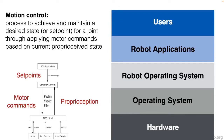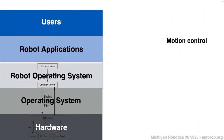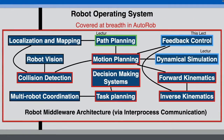To summarize motion control: it's the process by which a robot can achieve and maintain some desired state for some of its joints by applying motor forces based on the current perceived state. Within our robot operating system framework, this maps quite nicely from the high-level robot application down towards the low-level hardware.